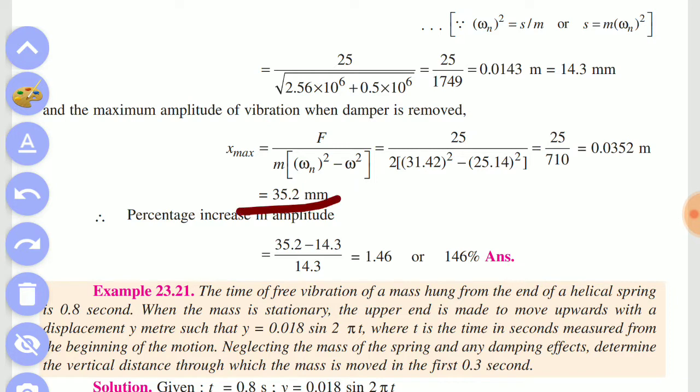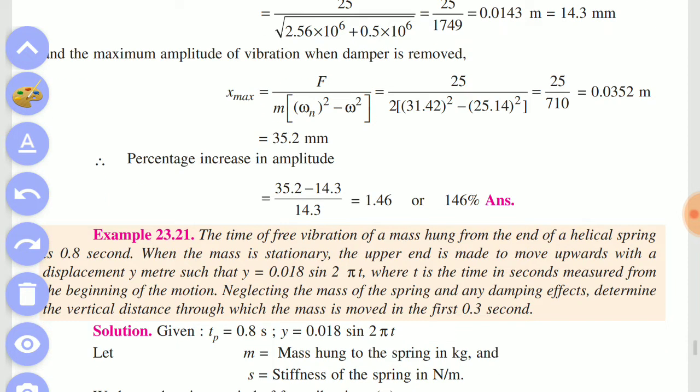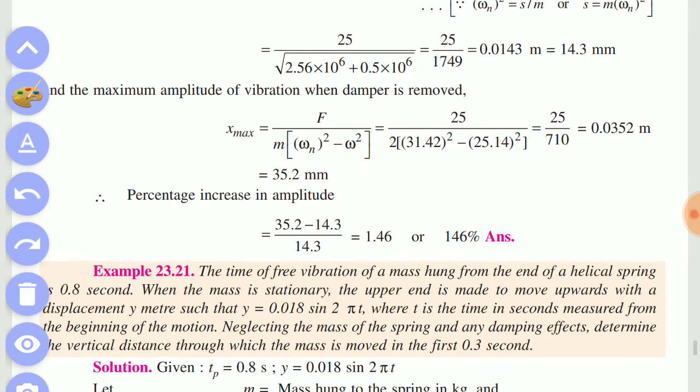The difference is 35.2 minus 14.3. Here are the two values. Now for increase in amplitude, the lower value is 14.3. If you are dividing by 14.3, you get 1.46, or 146 percent. That is the answer.